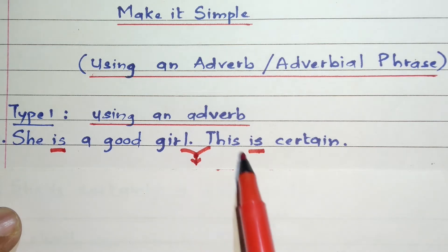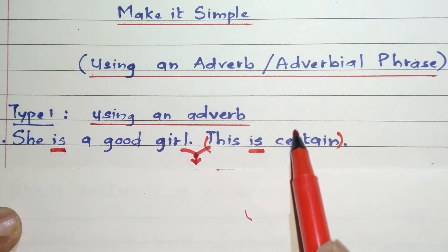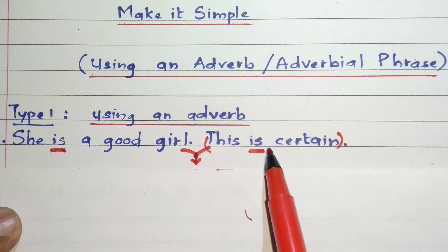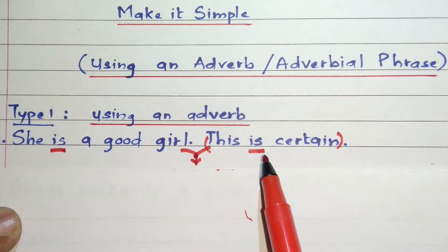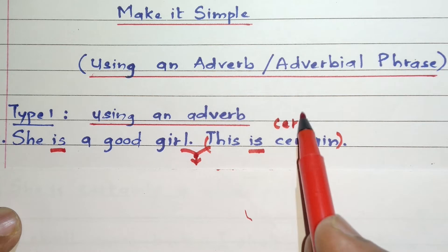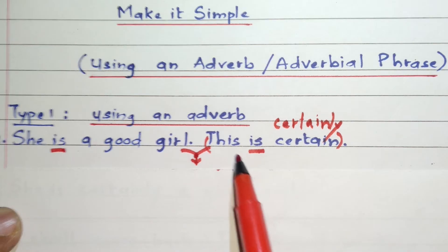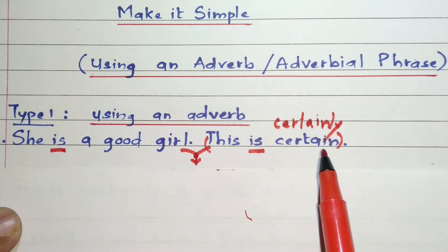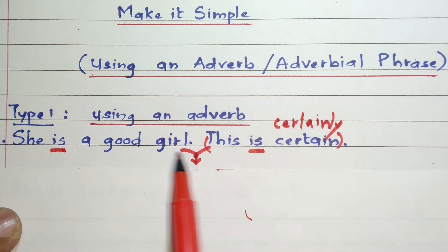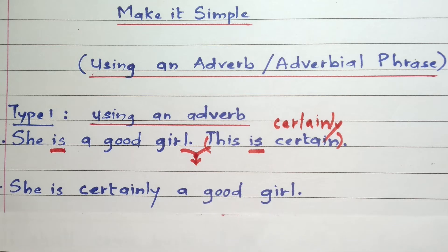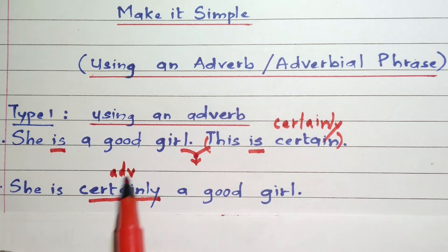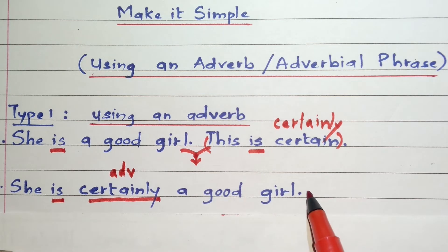This second sentence can be knocked out — that is, this finite verb will go. We can convert this into one single word, that is, an adverb. We can say 'certainly' instead of 'this is certain.' So our answer will be: she is certainly a good girl. Here 'certainly' is an adverb, and 'is' is the only finite verb, so therefore our answer is a simple sentence.